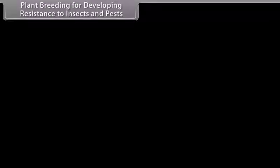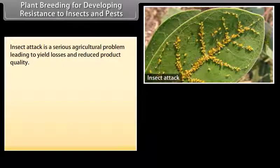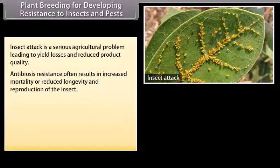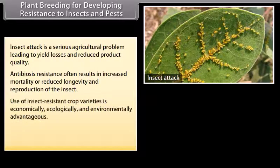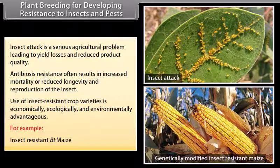Plant breeding for developing resistance to insects and pests. Insect attack is a serious agricultural problem leading to yield losses and reduced product quality. Antibiosis resistance often results in increased mortality or reduced longevity and reproduction of insects. Use of insect resistant crop varieties is economically, ecologically and environmentally advantageous. For example, insect resistant beet maize.